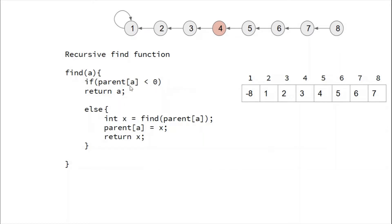Here is the recursive find function with path compression. The base case: if parent[a] < 0, it means a is the actual parent, so we return a. Otherwise, we call find recursively on parent[a] — for example, if we are at node 4, we call find(parent[4]) which is find(3). The return value x is the actual parent. We then update parent[a] = x and return x.